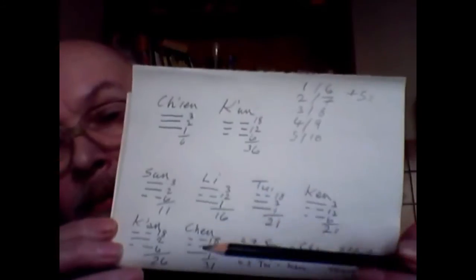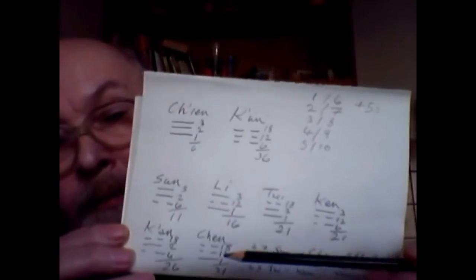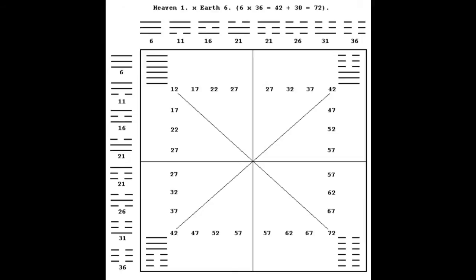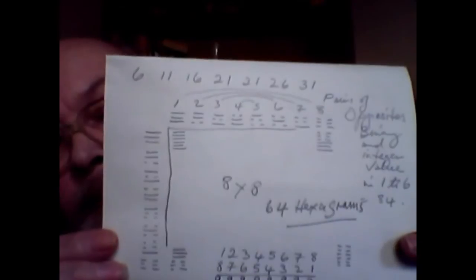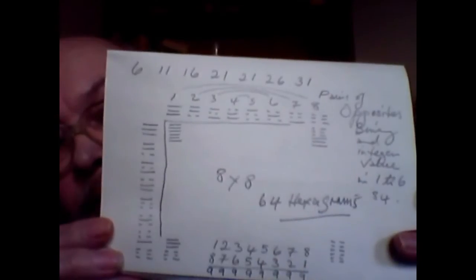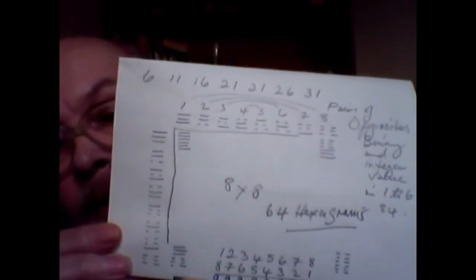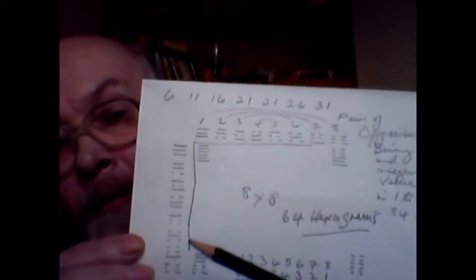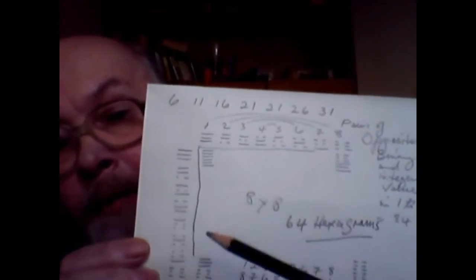If you were to do the other one, they would make 7s to infinity. When we see this square — these Trigrams and their integer value — they give you an 8 times 8 square which contains 64 hexagrams. Each of the hexagrams, or binary images within that square, are binary opposites, and each of the integers contained in these binary opposites always add to the same value. From 1 to 6, that's 84.